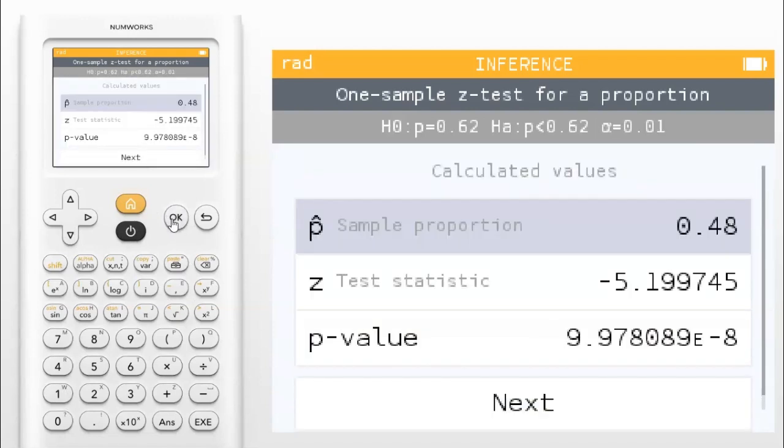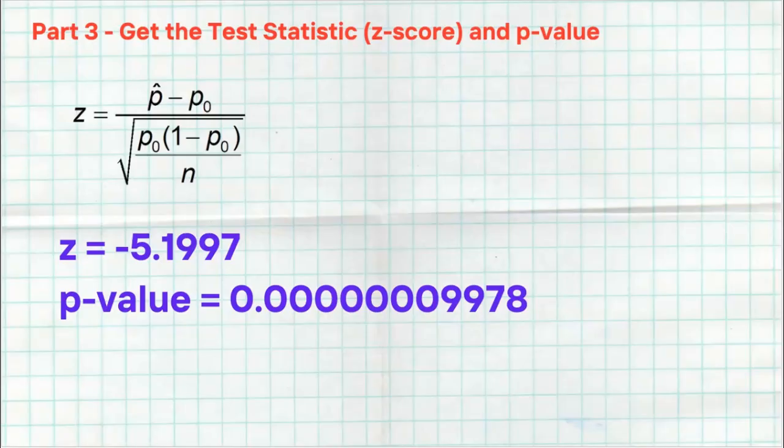And boom, look at that. How awesome is that? There's the Z score you need, negative 5.1997. There's the p-value. Make sure that you move the decimal eight times to the left. Do not put scientific notation on the exam. And that's it, right? Those are the two things you need. So as long as you quickly use your calculator, you can get the Z score and the p-value you need. And you don't have to show any work at all. How cool is that?